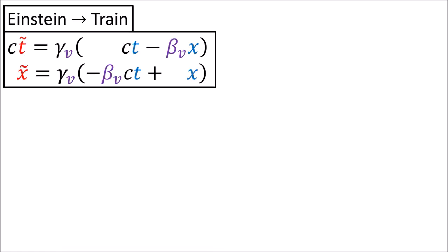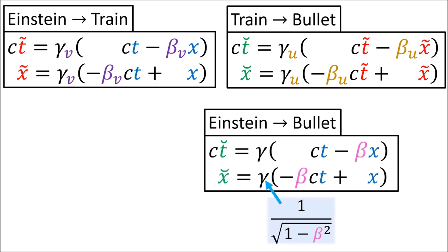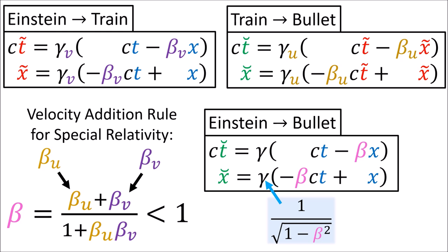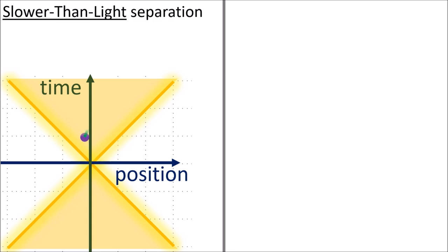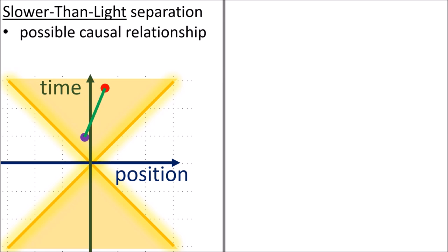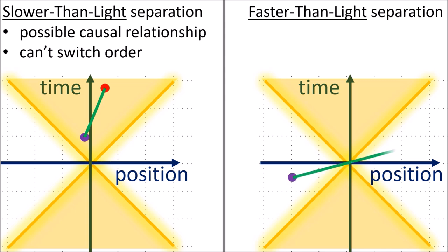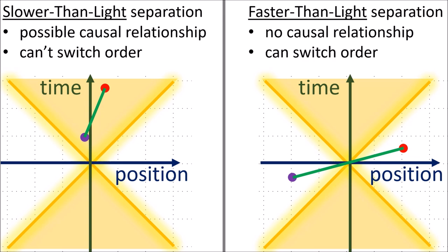To summarize: combining two Lorentz transformations gives us another Lorentz transformation with the law (beta-u plus beta-v) over (1 plus beta-u beta-v) for adding beta velocities, and no matter which velocities we use it is impossible to make an object travel faster than light. We also talked about the relativity of simultaneity and how the order of events can change in different reference frames. However, it is impossible to break causality — if two events are connected by a line slower than light they cannot have their order switched, but when connected by a line faster than light their order can be switched since no causal relationship is possible.